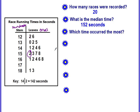Which time occurred the most? You're looking for the mode. There is no mode — if you look at your leaves in each row, they all appear only one time. So there is no mode. Don't put a zero, just say no mode.